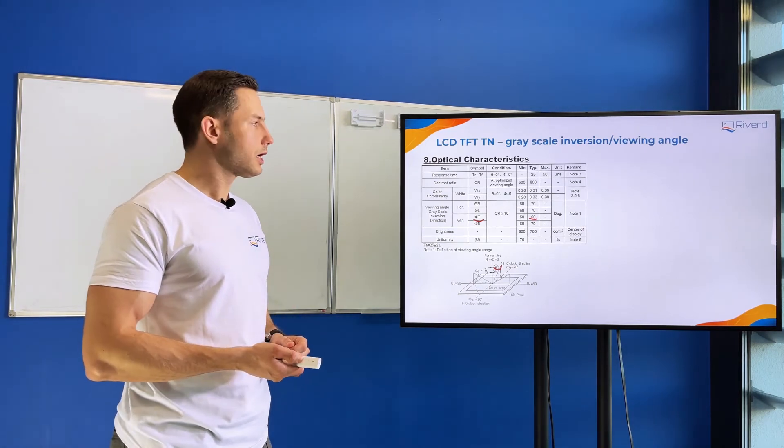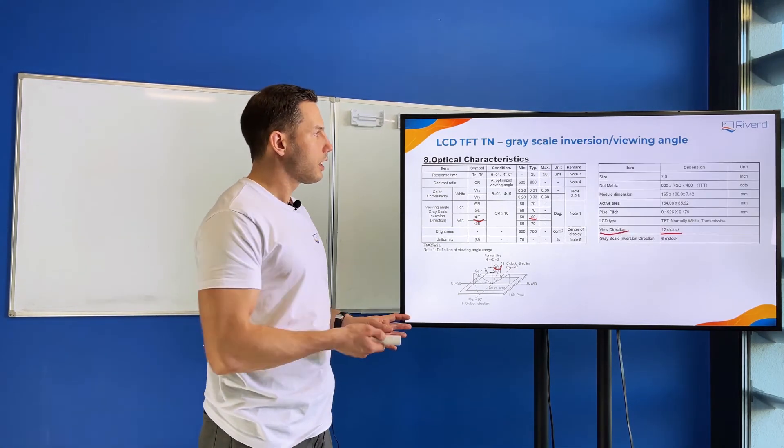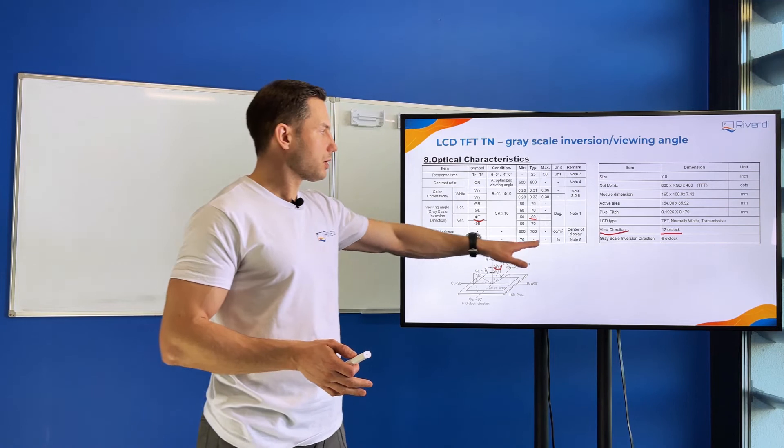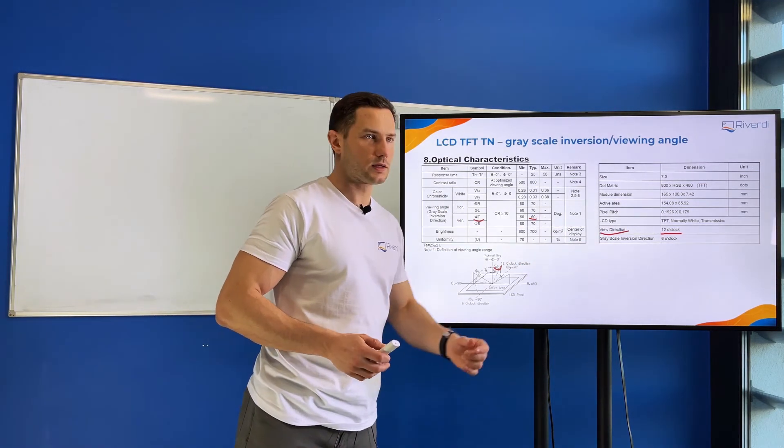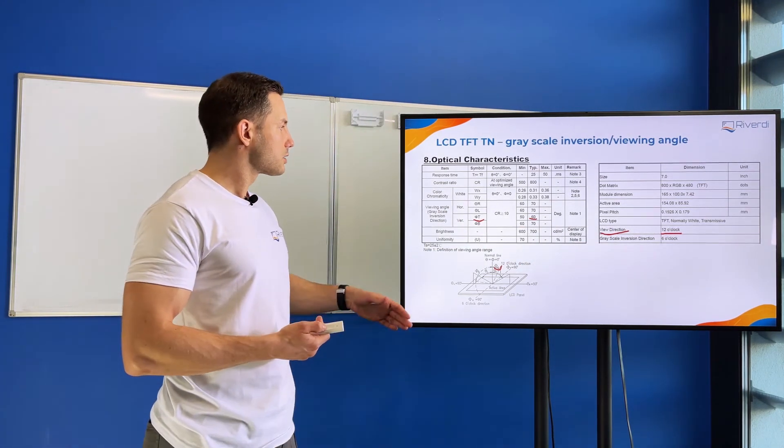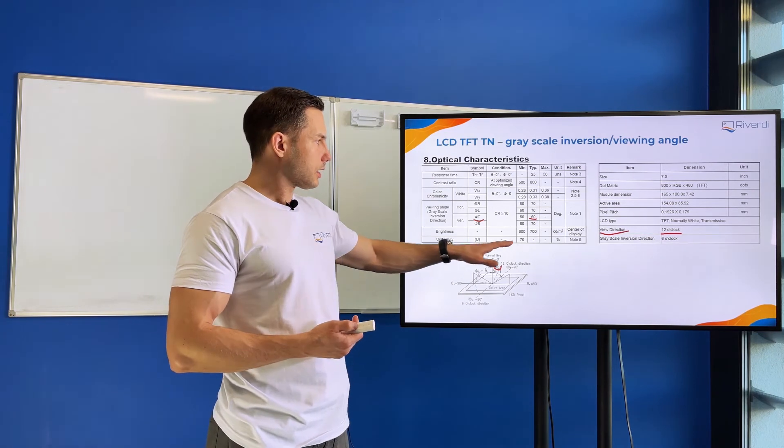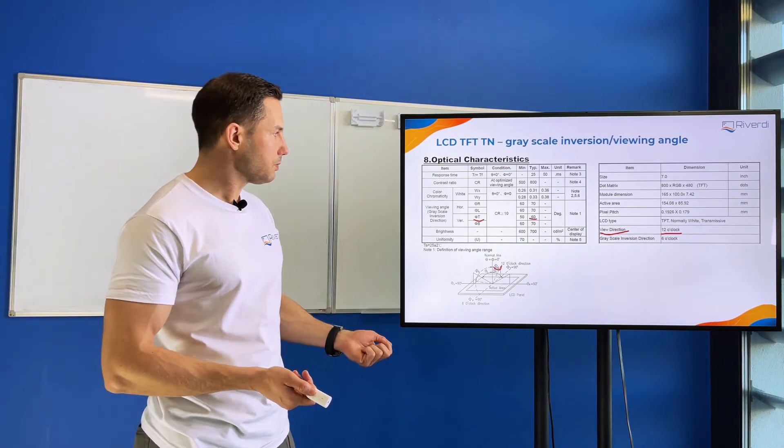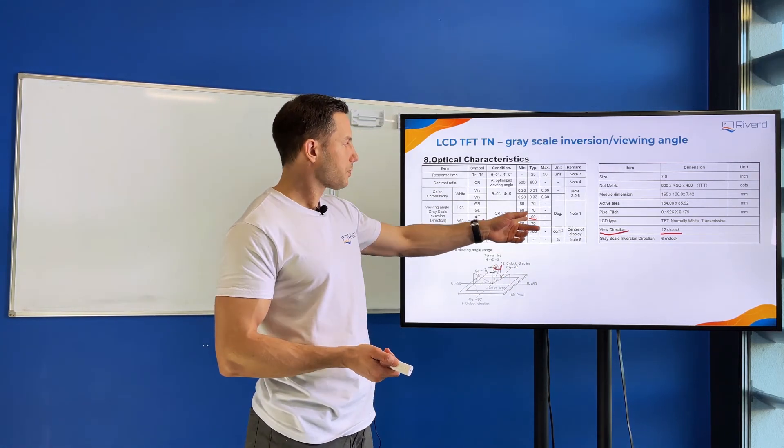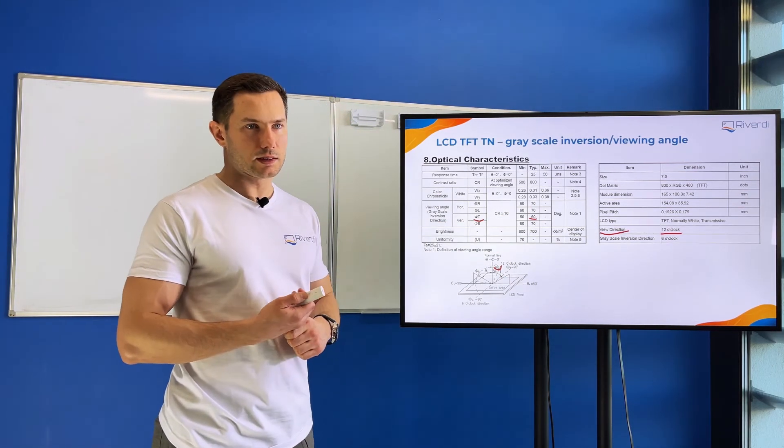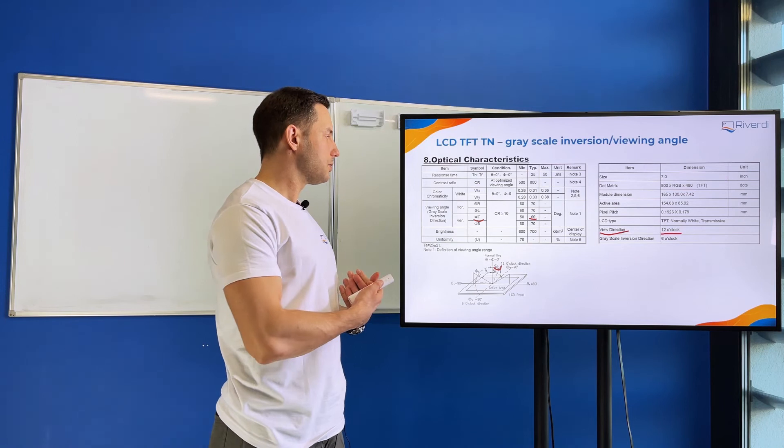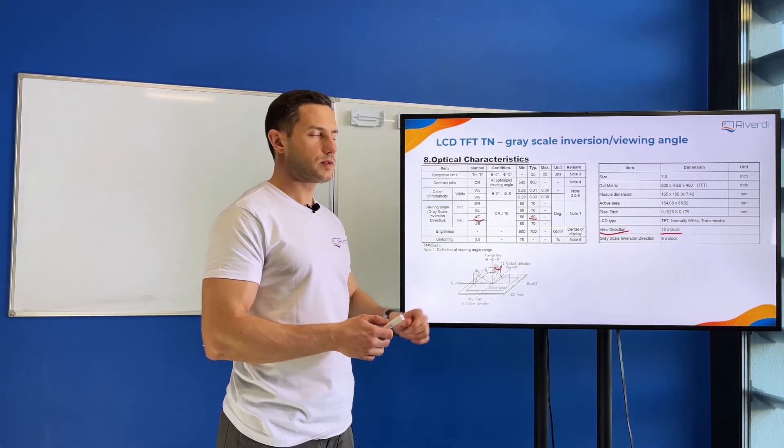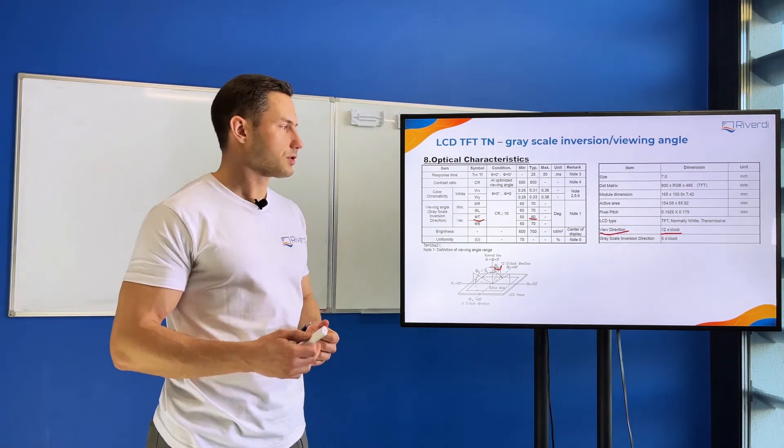If we see this specification—this is a correct one—we'll see that this display was defined as a 12 o'clock display. This display is best seen from 12 o'clock. The 12 o'clock position has the lower viewing angle of 60 degrees. What does it mean? It means on this side there will be no grayscale inversion.